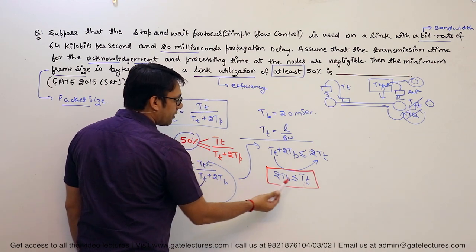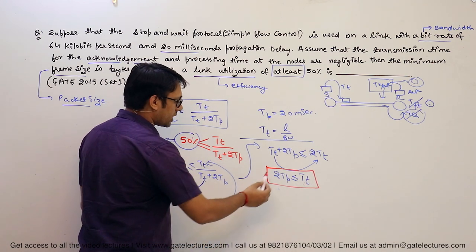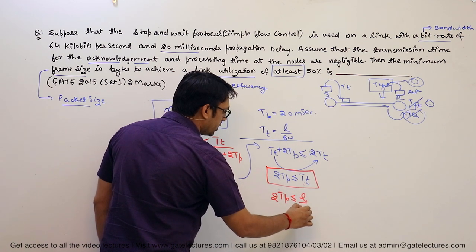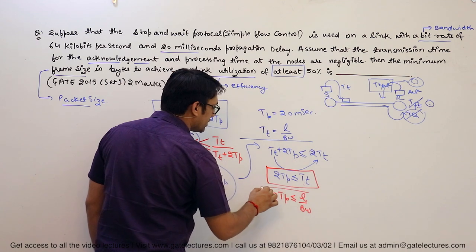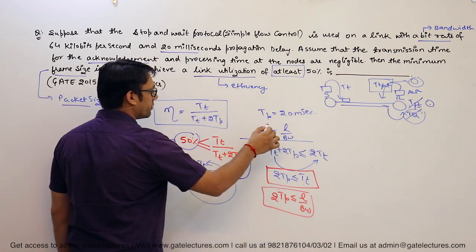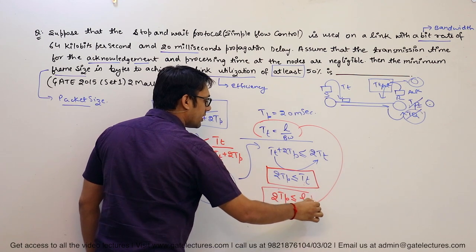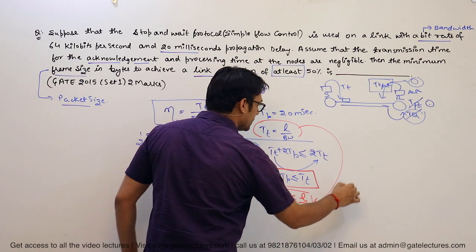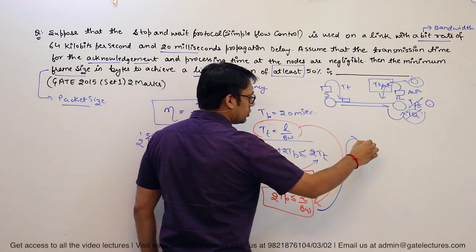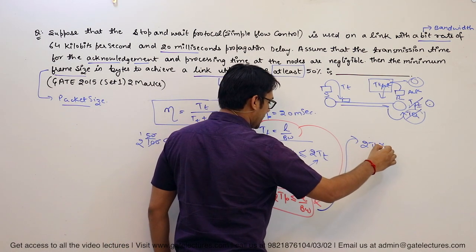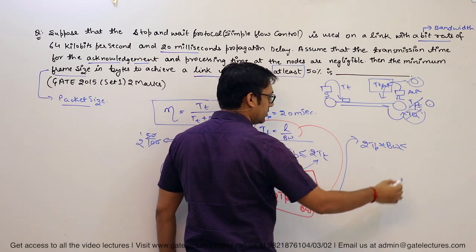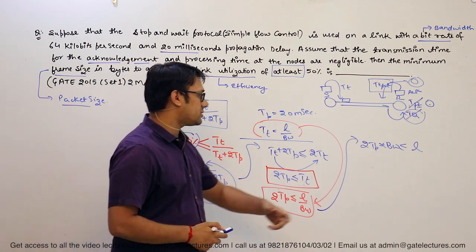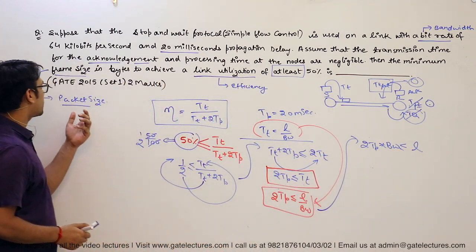We can break this further: since Tt = L / BW, substituting gives 2·Tp ≤ L / BW. Cross-multiplying: 2·Tp × BW ≤ L. So the minimum length of the data packet must satisfy L ≥ 2·Tp × BW.